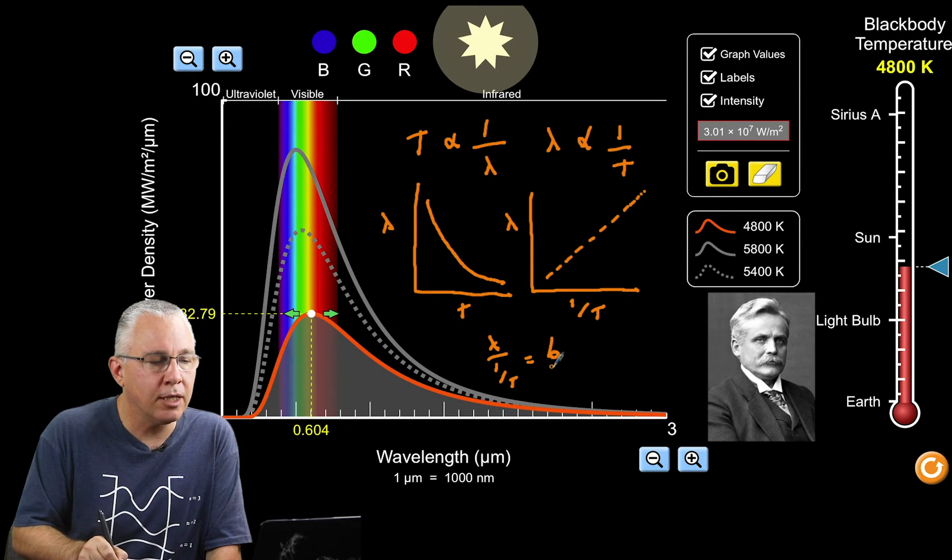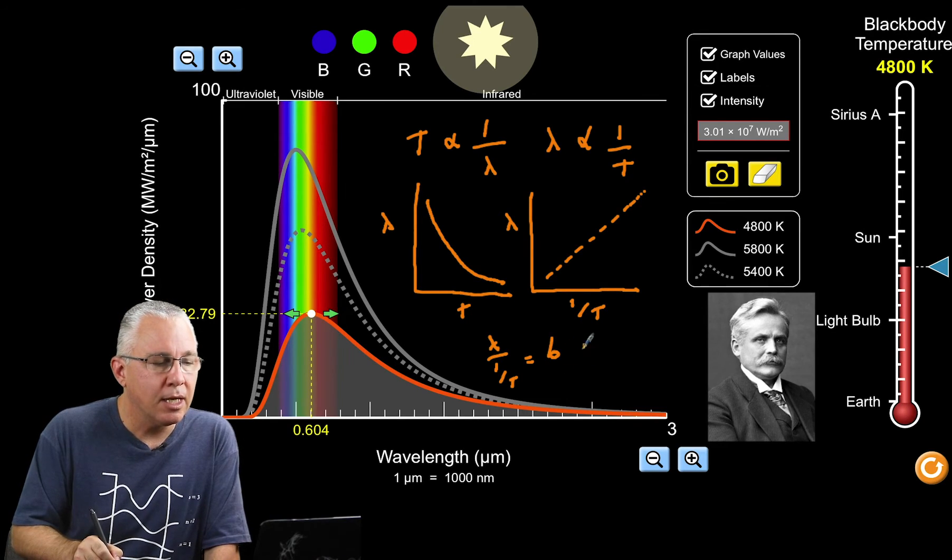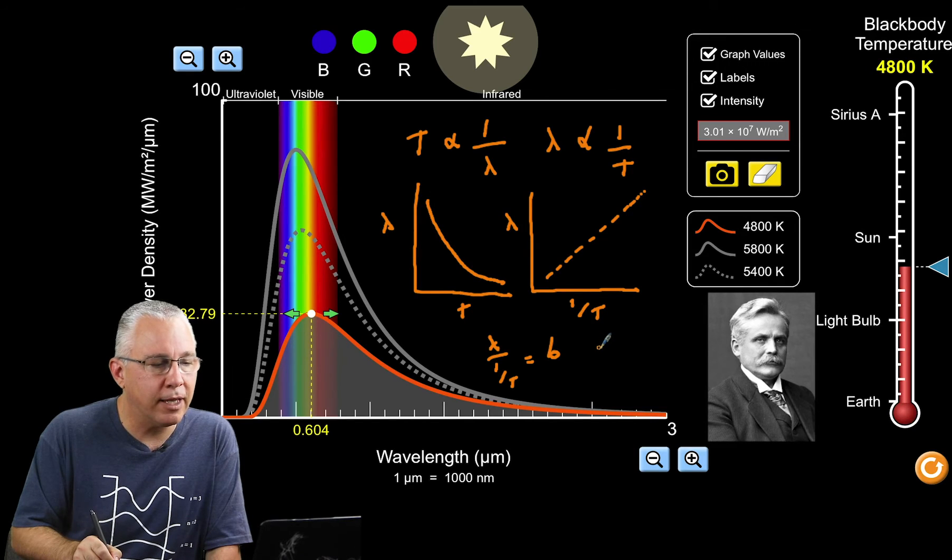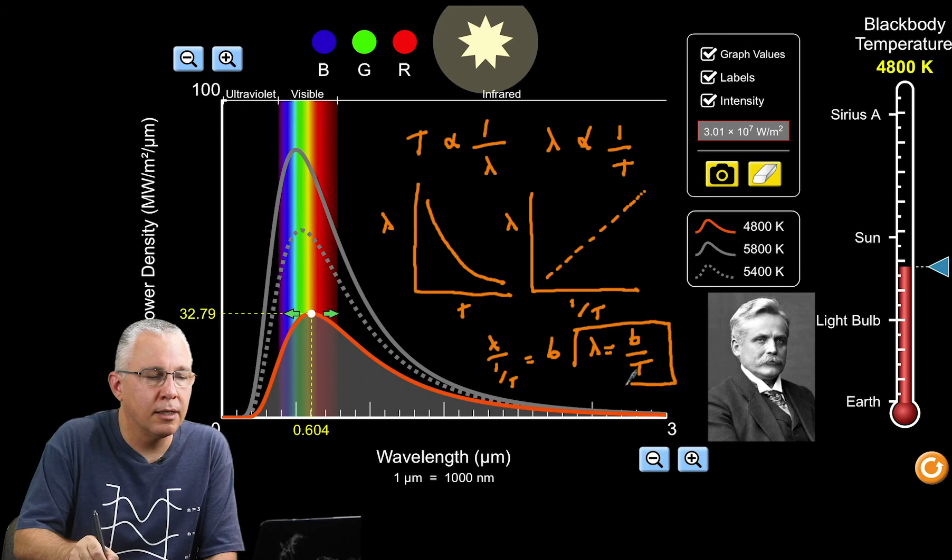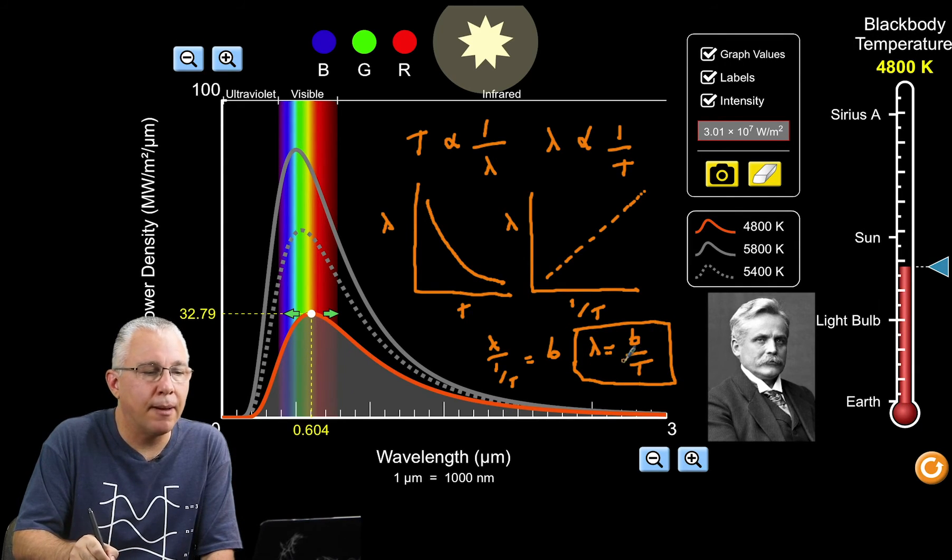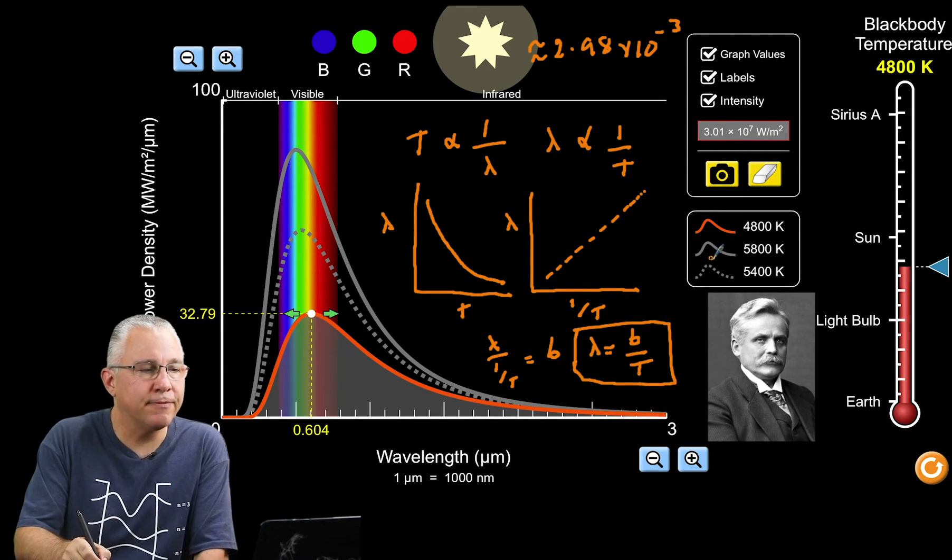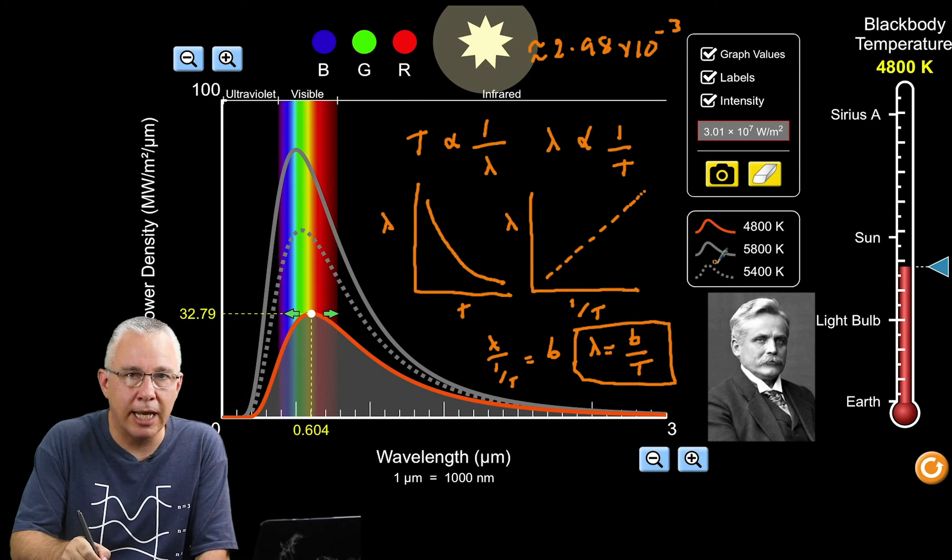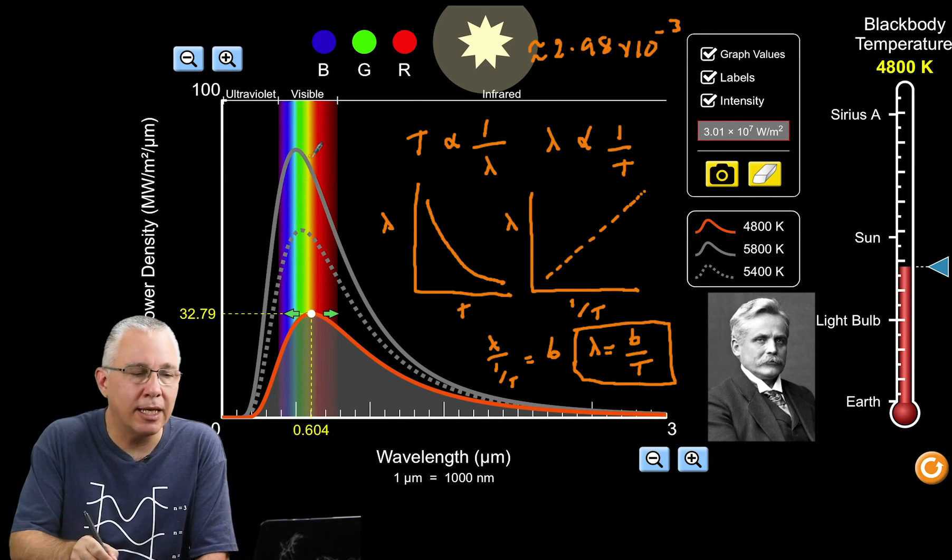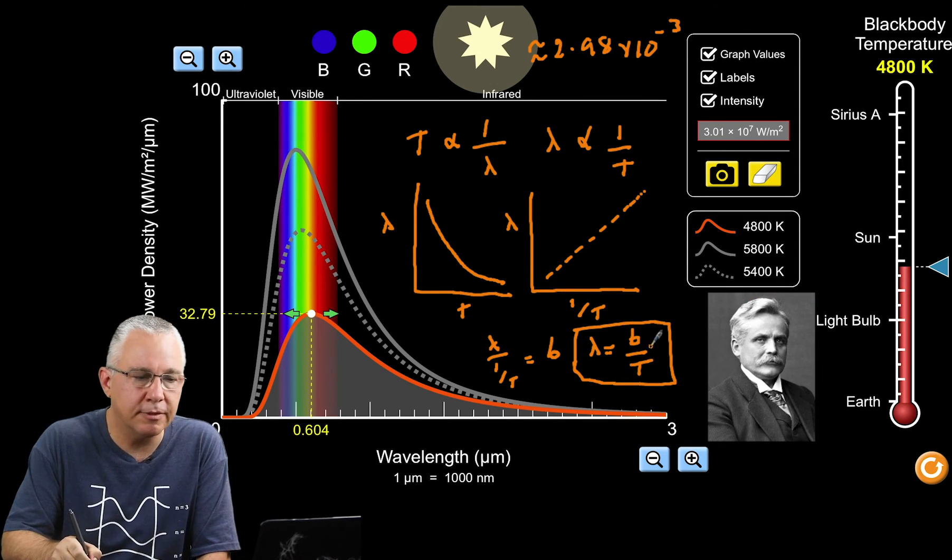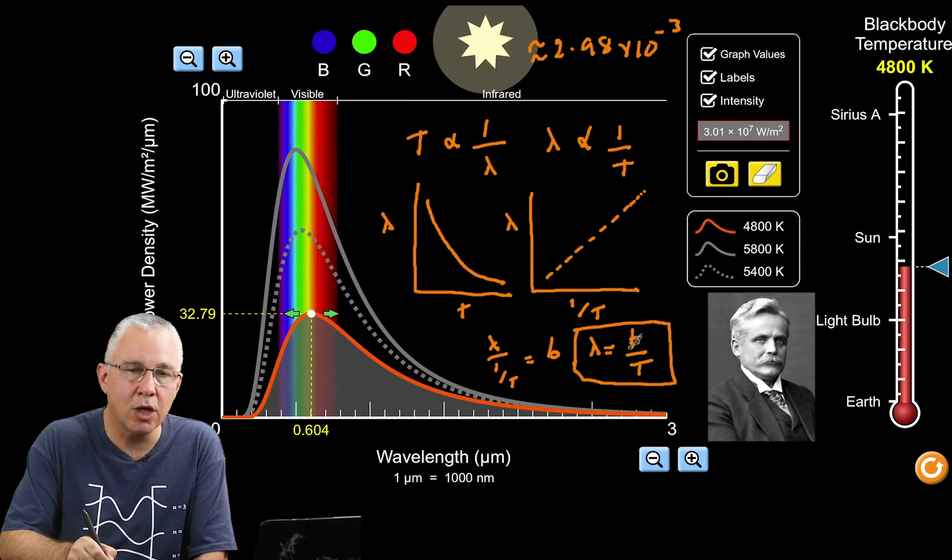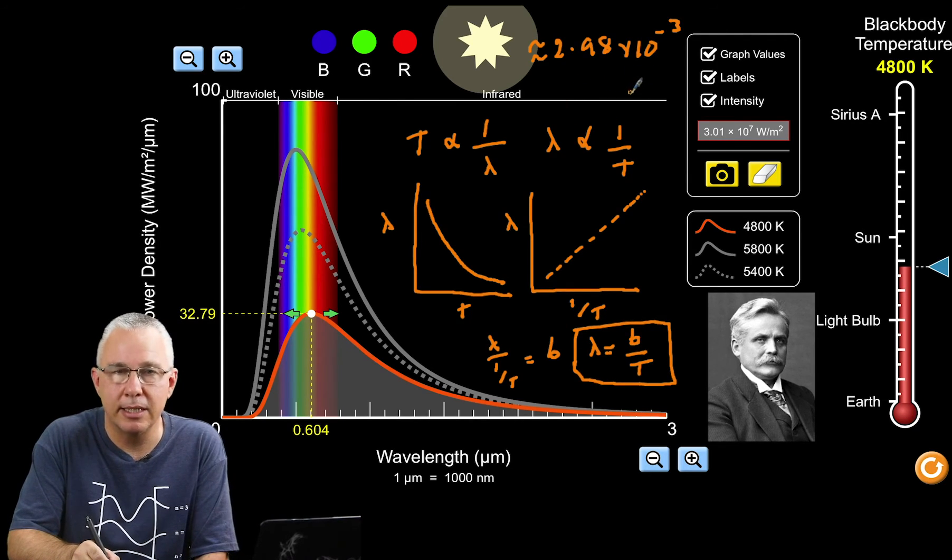If I rearrange that, I get the wavelength is equal to b over T, and there is Wien's Law. b ends up being equal to approximately 2.98 by 10 to the power of negative 3. Wien's Law is the relationship between the wavelength that has the greatest intensity and the temperature in Kelvin. It's a simple inverse relationship where the constant has the value of 2.98 by 10 to the negative 3.